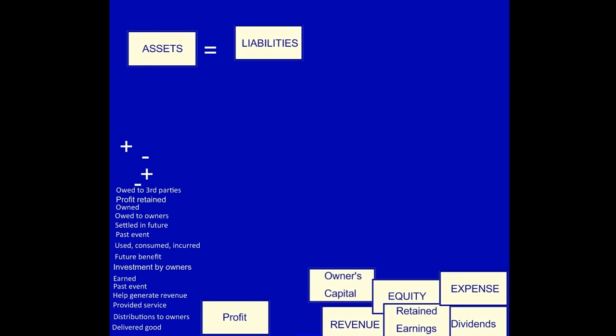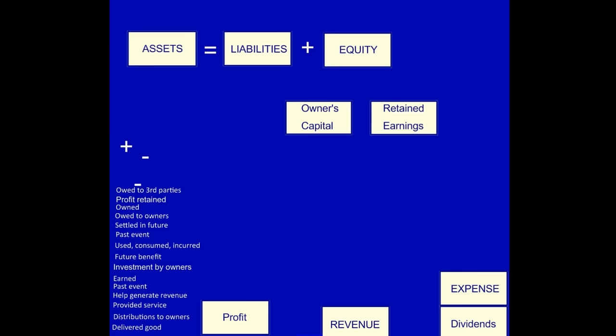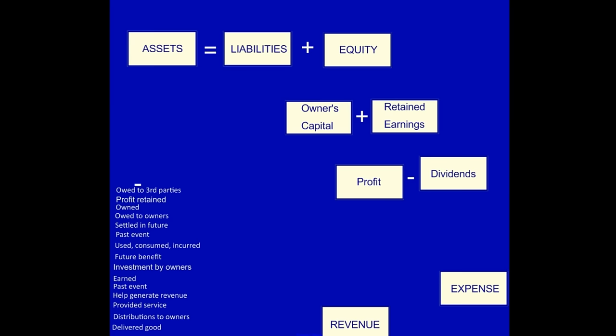The basic accounting equation, of course, is assets equal liabilities plus equity. What makes up equity? Equity is made up of owner's capital and retained earnings. What is retained earnings made up of? Retained earnings is made up of profit minus dividends. And what is profit made up of? Profit is made up of revenues minus expenses.